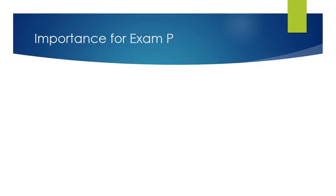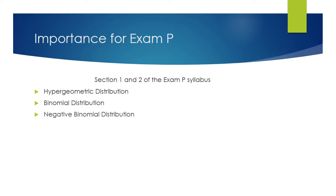So the importance of these types of questions is that, or these types of formulas of combination and permutation is that they come up on sections one and two of the syllabus. So they're part of the hypergeometric distribution, the binomial distribution, the negative binomial distribution, and questions involving counting. So it is important.